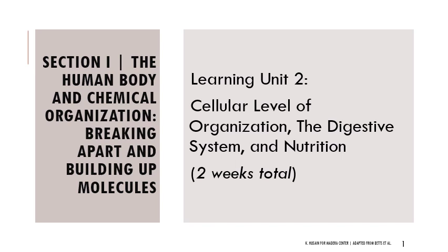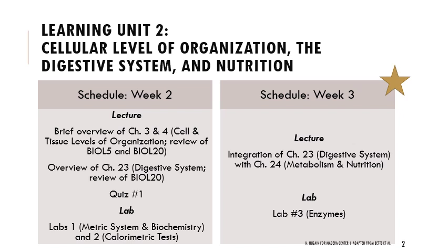These are the week 2 slides talking about learning unit 2, which covers the cellular level of organization, the digestive system, and nutrition. We're continuing to build off ideas from last week, specifically thinking about digestive physiology. Last week we talked about the different structures of the digestive system, cells and tissue levels of organization, and in lab you covered calorimetric tests. This week we'll talk about digestive physiology, metabolism, and nutrition — how stuff gets broken down and what happens after it's absorbed. In lab, you'll be covering enzymes, which ties in nicely with digestive hydrolytic enzymes.